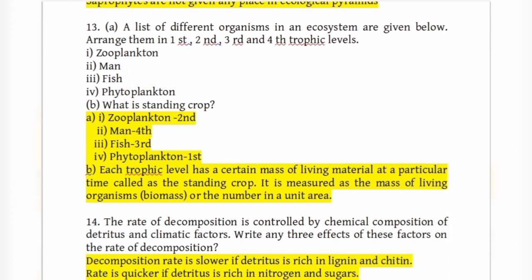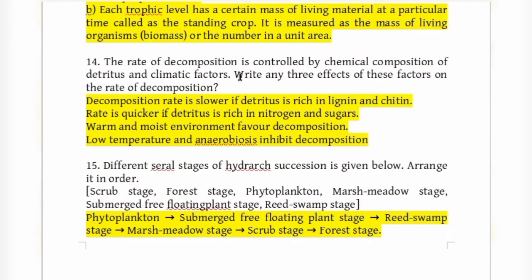The rate of decomposition is controlled by chemical composition of detritus and climatic factors. The rate is slower if detritus is rich in lignin and chitin, and quicker if rich in nitrogen and sugars. Warm and moist environments favour decomposition, while low temperature and anaerobic conditions inhibit it.